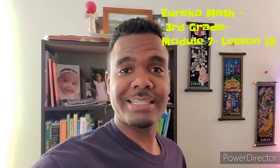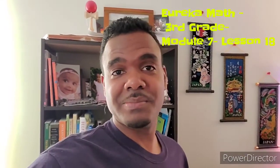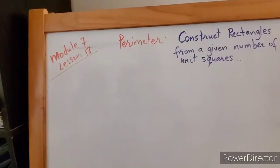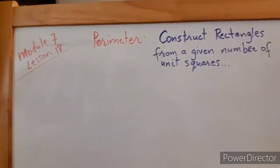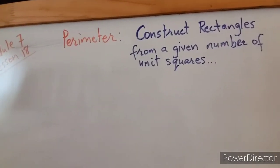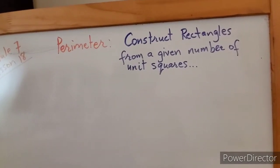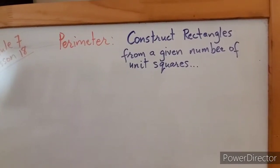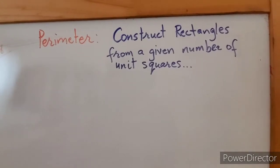We're going to start lesson 18 today — Module 7, lesson 18. Let's get started. We're going to go on the whiteboard today and work out some perimeter problems. Today is lesson 18, module 7, and we're focusing on constructing rectangles from a given number of unit squares to determine the perimeter.